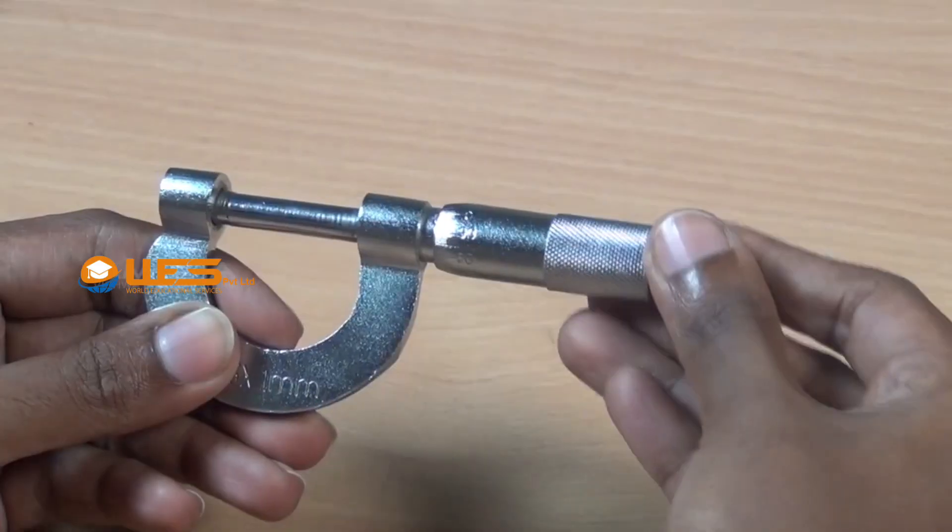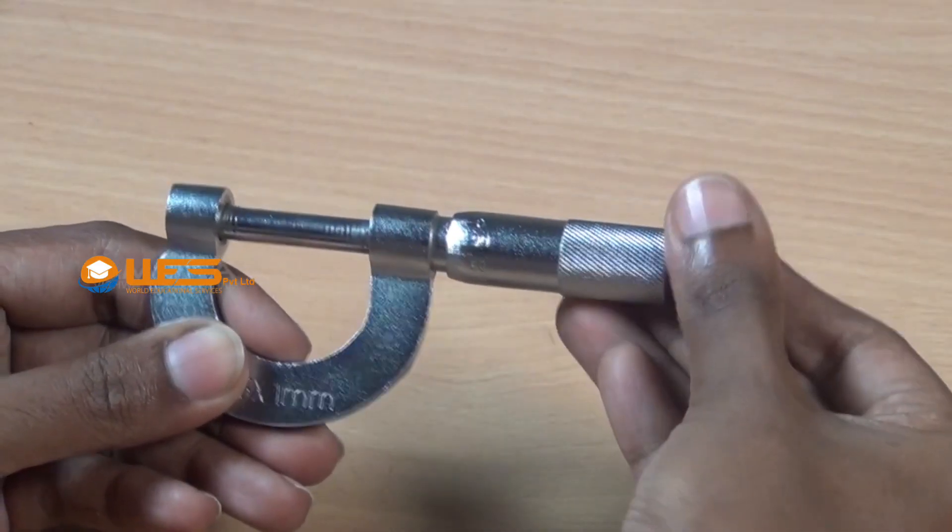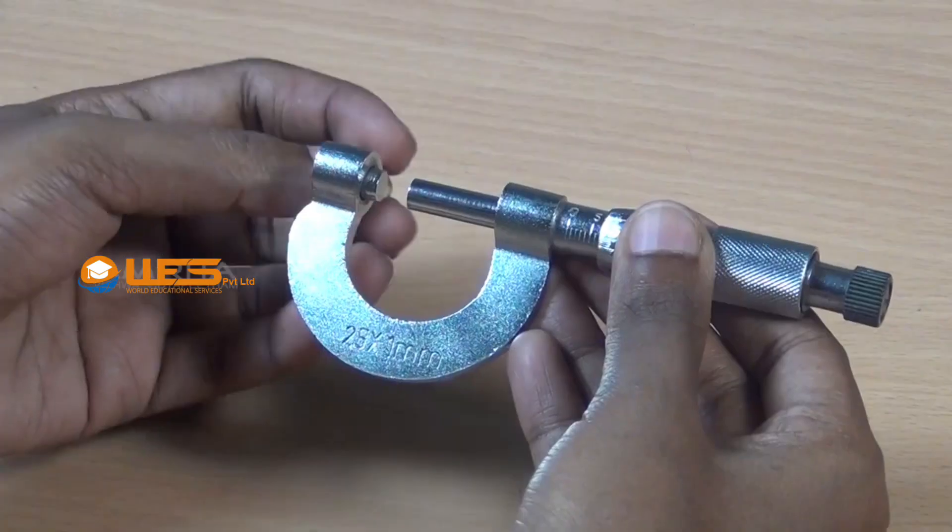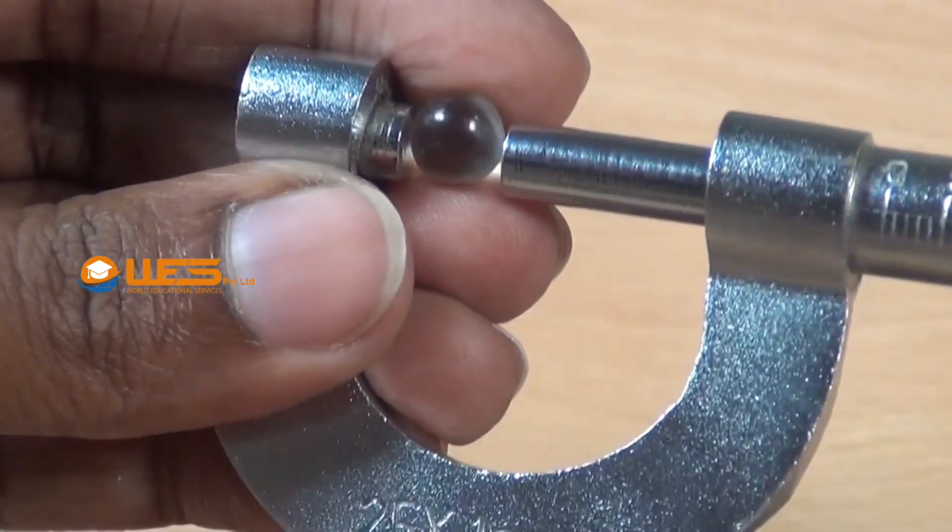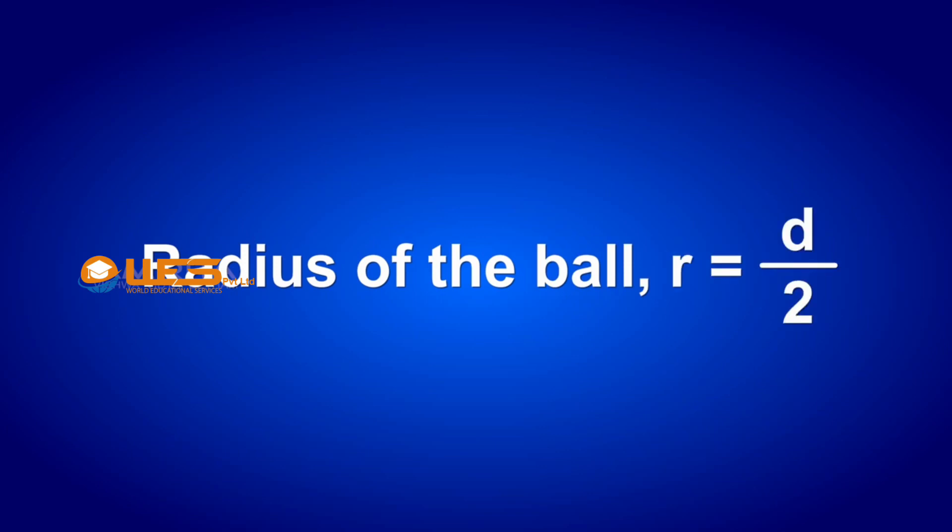Procedure: Calculate the least count and zero correction of the screw gauge. Find the diameter d of the first ball using the screw gauge. Now, the radius r of the ball can be calculated as r = d/2.